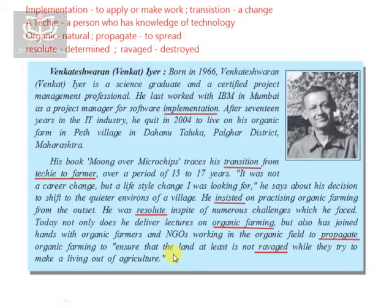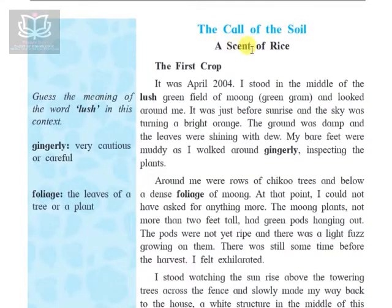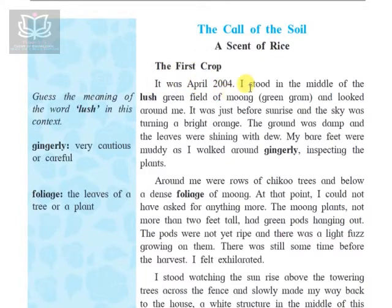Now let us start with the chapter explanation: 'The Call of the Soil: A Scent of Rice.' The call of the soil has a deeper meaning which will be discussed later. The first crop: 'It was April 2004. I stood in the middle of the lush green field of moong — that is green gram — and looked around me.' Lush means a rich, vast, beautiful green field. It was just before sunrise and the sky was turning a bright orange.